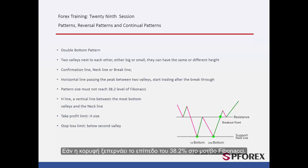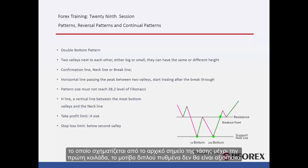If the peak point passes the 38.2% level on the Fibonacci pattern, which is drawn from the start point of the trend to the first valley, the double bottom pattern will not be reliable.